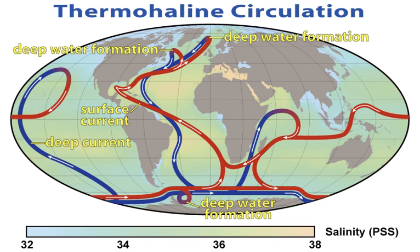The first international organization of oceanography was created in 1902 as the International Council for the Exploration of the Sea. In 1903 the Scripps Institution of Oceanography was founded, followed by Woods Hole Oceanographic Institution in 1930, Virginia Institute of Marine Science in 1938, and later the Lamont Doherty Earth Observatory at Columbia University, and the School of Oceanography at University of Washington. In Britain, the National Oceanography Centre, an institute of the Natural Environment Research Council, is the successor to the UK's Institute of Oceanographic Sciences. In Australia, CSIRO Marine and Atmospheric Research is a leading centre. In 1921 the International Hydrographic Bureau was formed in Monaco.